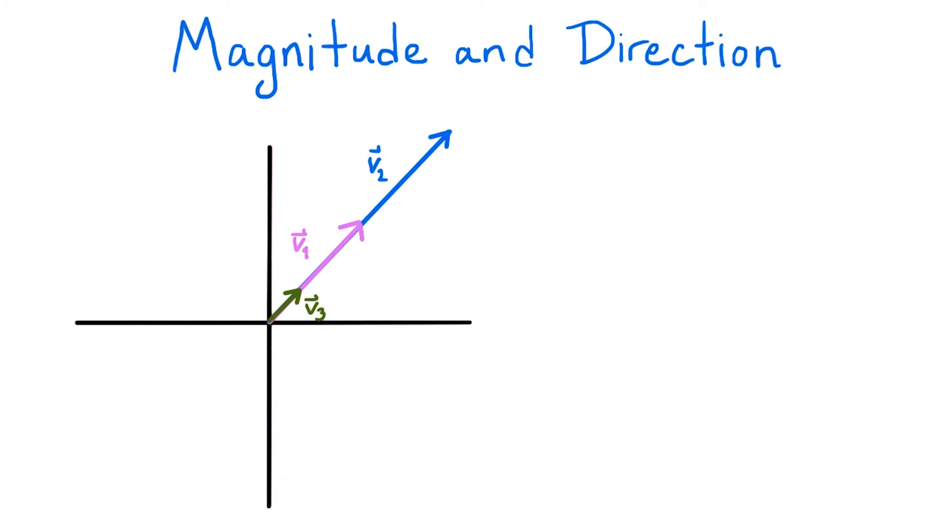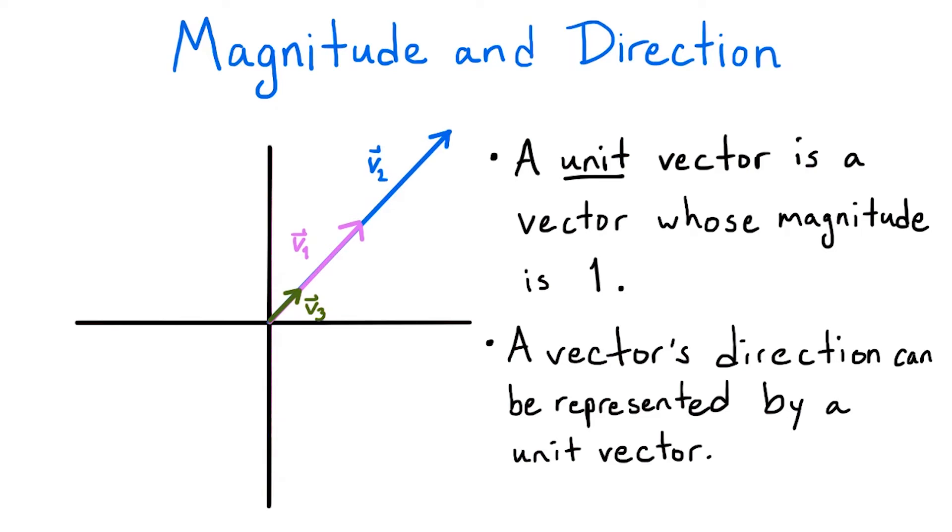So for each possible direction of vector, we have a whole class of vectors pointing in that direction. So to define the direction of a vector, we will choose a canonical or representative element from each class. For simplicity, we'll use the vector of magnitude 1 from each class. We'll call these vectors the unit vectors, since they each have a length of one unit. The process of finding the unit vector pointing in the same direction as a given vector is called normalization.